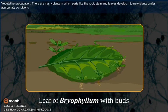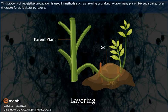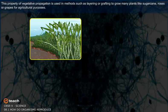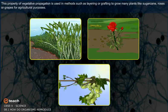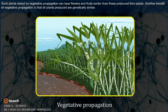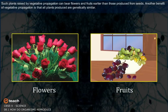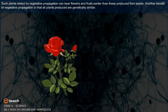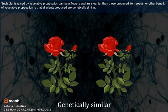There are many plants in which parts like the root, stem, and leaves develop into new plants under appropriate conditions. This property of vegetative propagation is used in methods such as layering or grafting to grow plants like sugar cane, roses, or grapes for agricultural purposes. Plants raised by vegetative propagation can bear flowers and fruits earlier than those produced from seeds, and all plants produced are genetically similar.